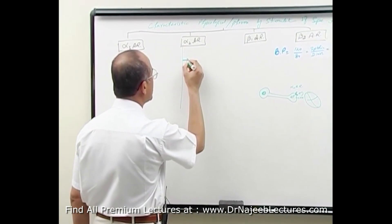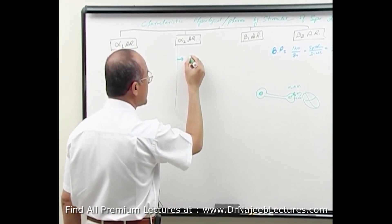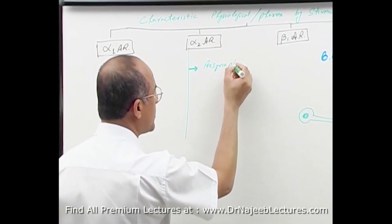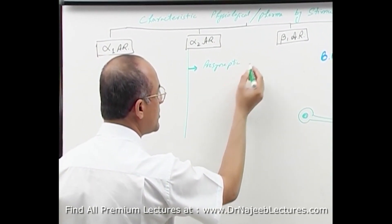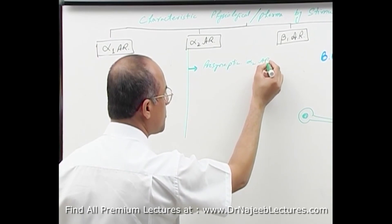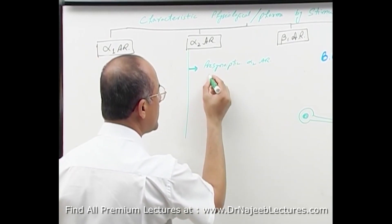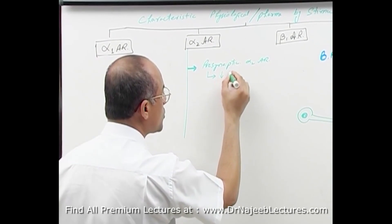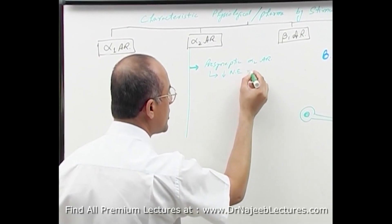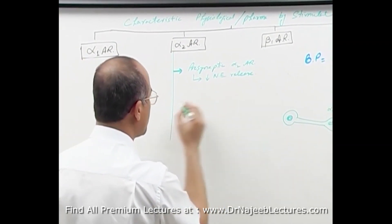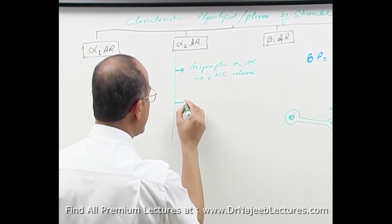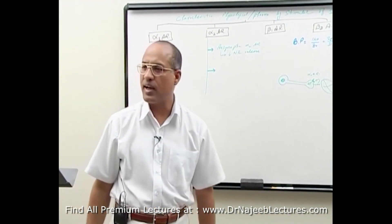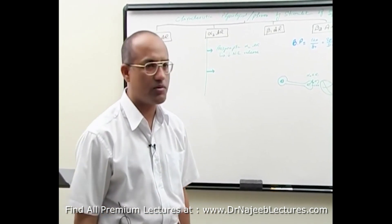Presynaptic alpha 2 adrenergic receptors will lead to reduced norepinephrine release from the nerve ending. This is one action of alpha 2 adrenergic receptor. What is another action of alpha 2 adrenergic receptor?